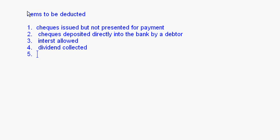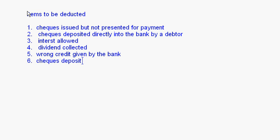Fifth: any wrong credit given by the bank should be deducted. Sixth: checks deposited into the bank but not recorded in the cash book. When checks are deposited the bank collects the amount and reduces the overdraft balance as per the passbook, but since you have not recorded those checks in the cash book, the cash book overdraft balance is still high compared to the passbook overdraft balance. So this should be deducted.